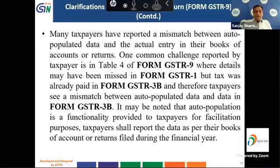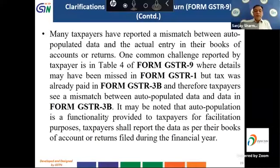From the CBIC press release: many taxpayers have reported a mismatch between auto-populated data and actual entries in their books or returns. One common challenge is in Table 4 of GSTR 9 where details may have been missed in GSTR 1 but tax was already paid in GSTR 3B, causing a mismatch. Auto-population is a facilitation feature; taxpayers shall report data as per books of accounts or returns filed during the financial year.